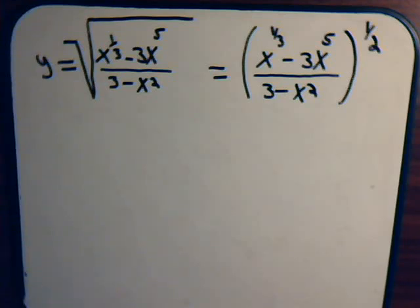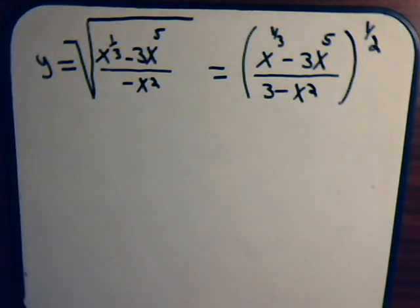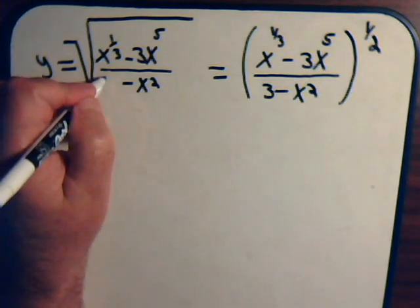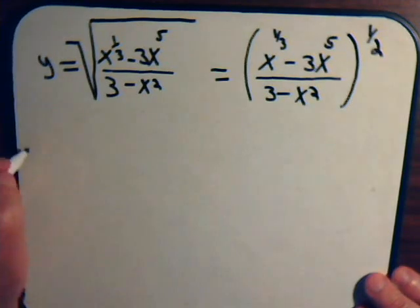In this video we're going to find the derivative of this algebraic expression. We have the square root of x to the 1/3rd minus 3 times x to the 5th, divided by 3 minus x squared. If we write it in exponential form, it would be this to the 1/2 power. We want to find dy/dx.